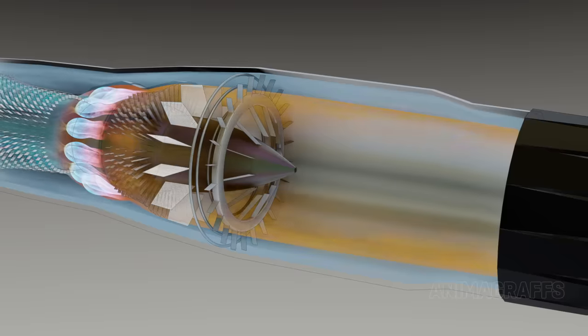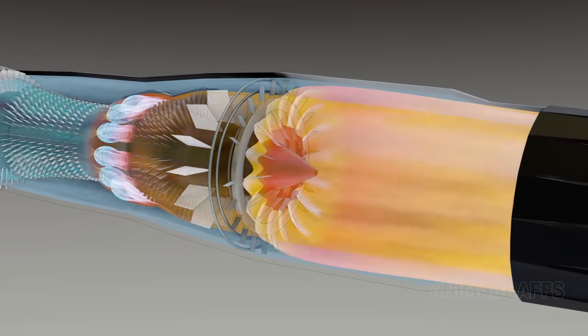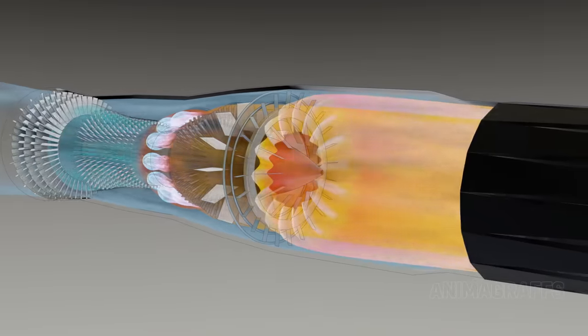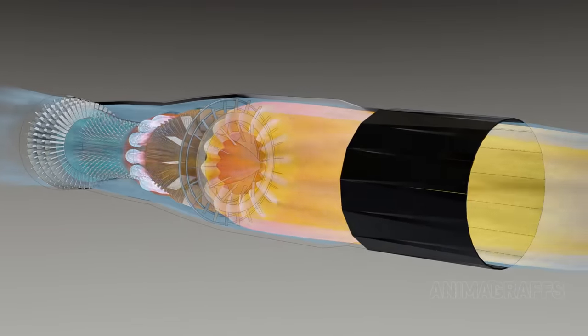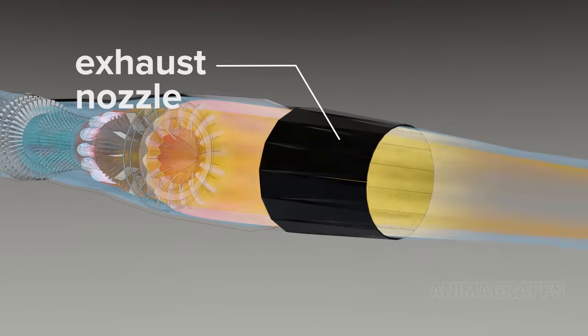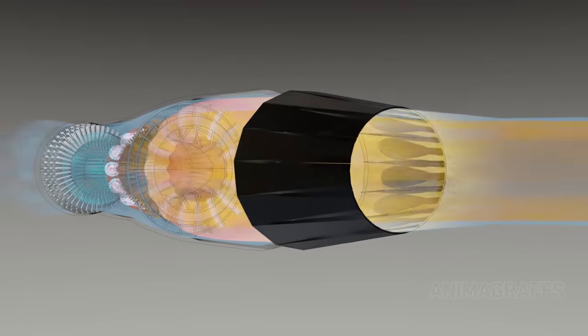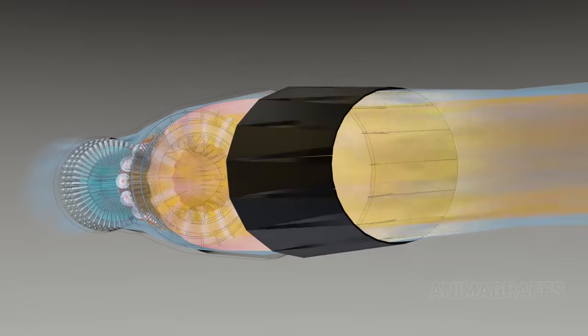Since afterburner is fuel inefficient, it's generally used in short bursts during take-off, climb, or combat maneuvers. The exhaust nozzle is adjustable for maximum exhaust acceleration and to avoid undesirable back pressure which can harm forward engine parts.